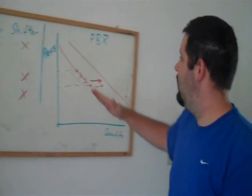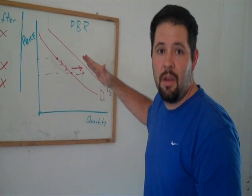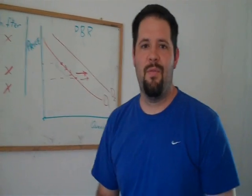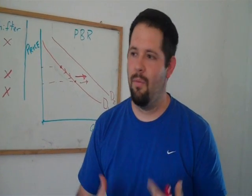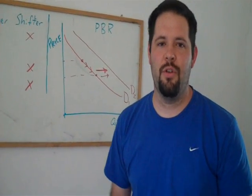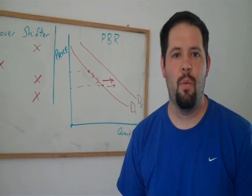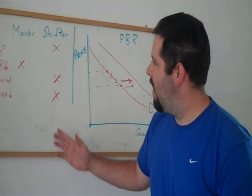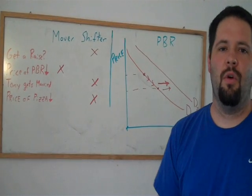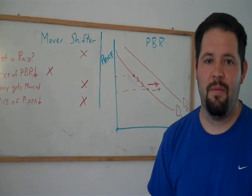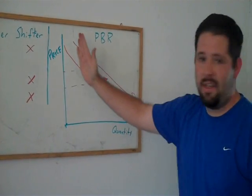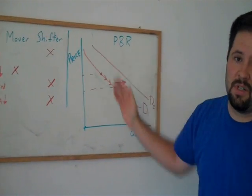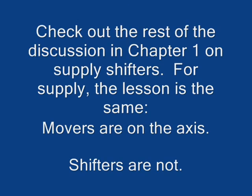So now you have a sense for movers and shifters of demand curves. And hopefully, when you are approached with questions about whether you're moving along a demand curve or shifting the demand curve, you'll be able to identify the difference. Remember, just look at the axis. If it's on the axis, it's a mover. If it's not, it's a shifter.